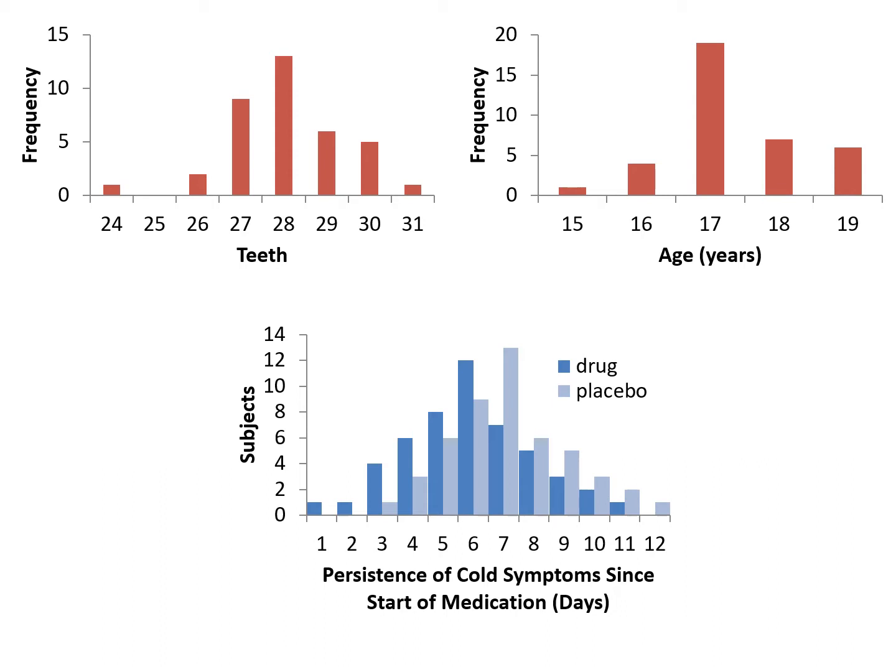The x-axis shows the number of days cold symptoms have persisted. You will see that the blue bar is distributed slightly to the left, which implies that the cold drug may be having an effect on alleviating flu symptoms. On the other hand, the light blue bar is distributed to the right, which tells us that the subjects treated with a placebo continue to present cold symptoms for more days.